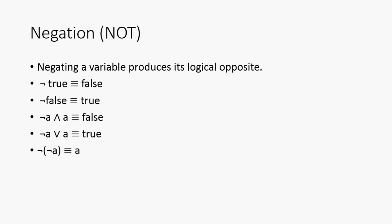And now we have negation. Negating a variable produces its logical opposite. So, not true is false, not false is true. Not A and A is false, obviously, because something can't be true and false at the same time. So, that's an important one to remember.